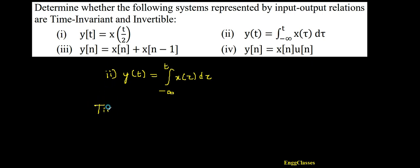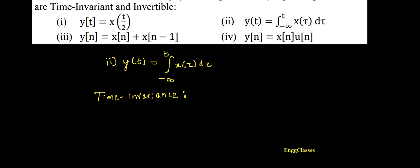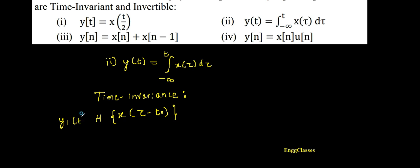Now the task is to determine if this system is time invariant or not. The property says that a shift in the input must lead to an identical time shift in the output. So let me consider the first half of the statement, that is the shift in the input. In this numerical the input is x(τ), so a shift in the input is x(τ - t0). Such an input I would give to a system with operator h so that I would get the output y1(t).